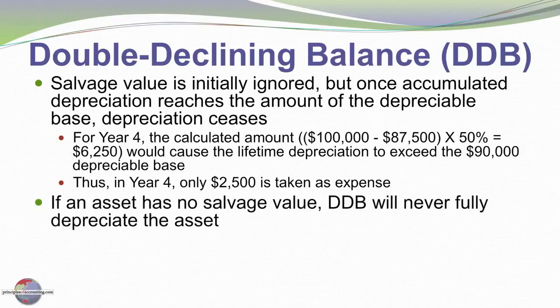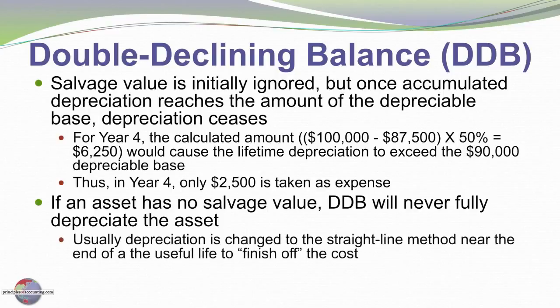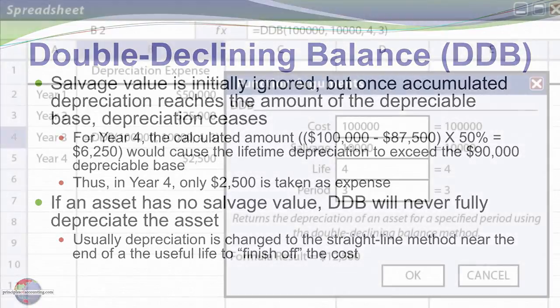If the asset has no salvage value, double declining balance would never fully depreciate the asset. Usually a company will change to straight line near the end of the useful life of an asset simply to finish off the accounting for the full cost of the asset if there is no salvage value.